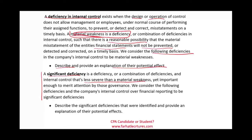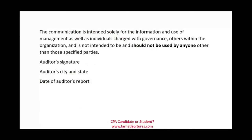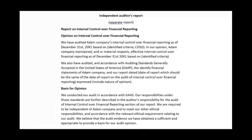If we find material weaknesses or significant deficiencies, we describe them and provide their potential effect. A significant deficiency is a deficiency less severe than a material weakness. Since this report is for management, we limit its use: this communication is intended solely for the information and use of management and individuals charged with governance and should not be used by anyone else. Then we have the auditor signature, state, and the report date.